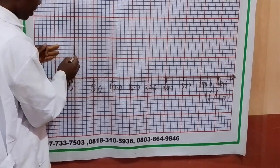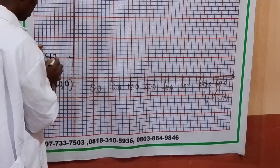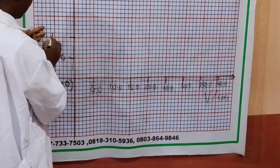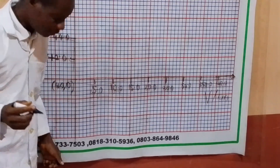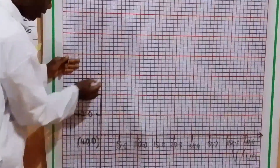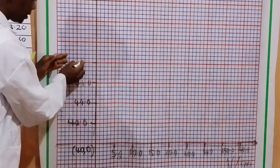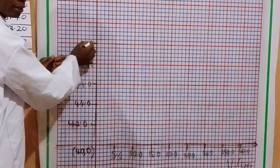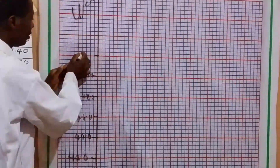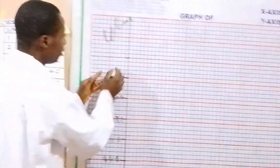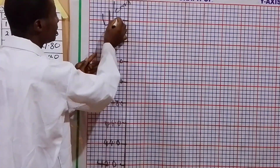For the vertical axis we have 42.0, 44.0, 46.0, 48.0, 50.0, 52.0, 54.0, and we can add 56.0.